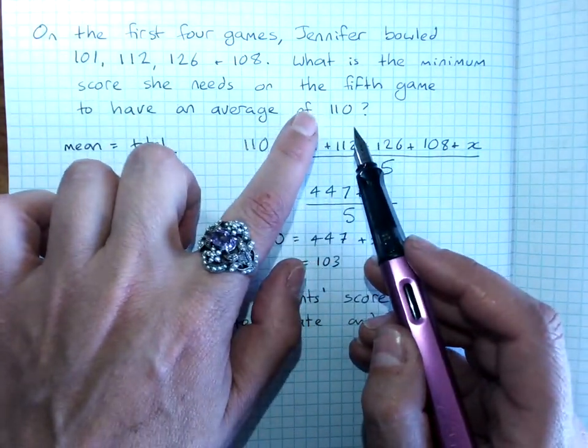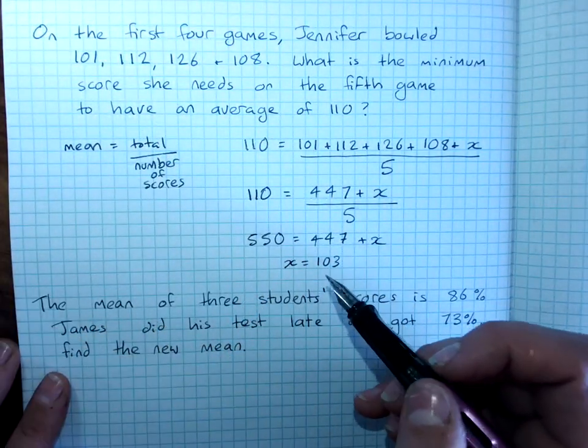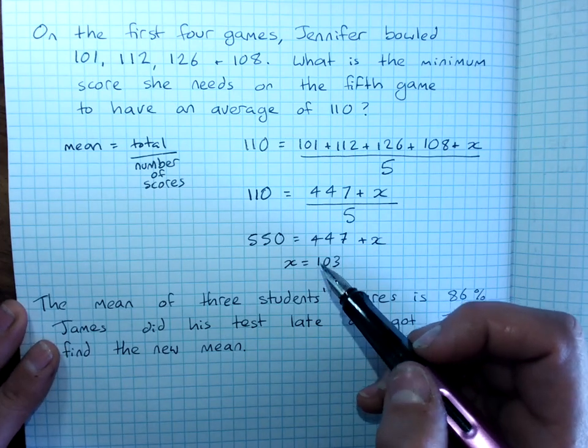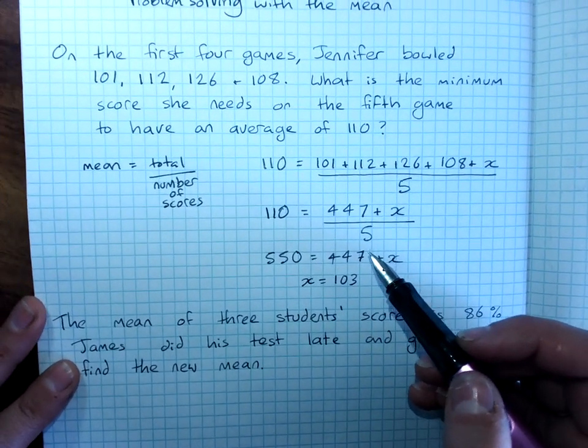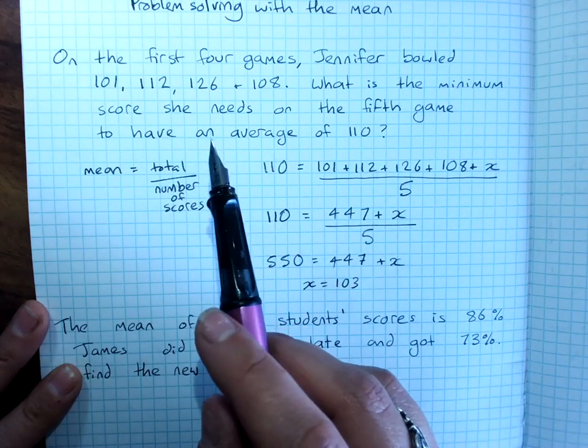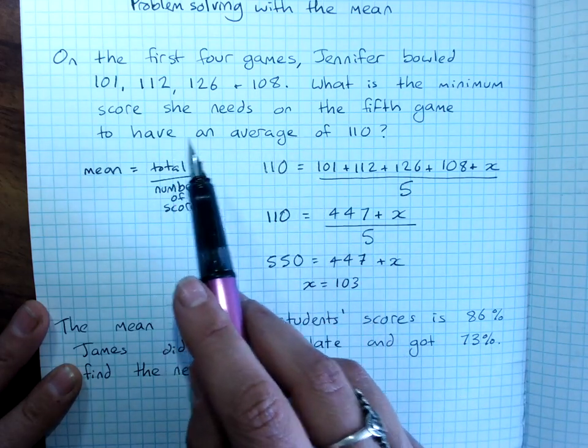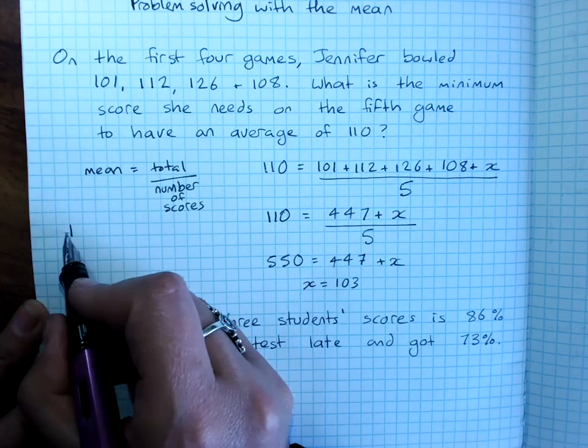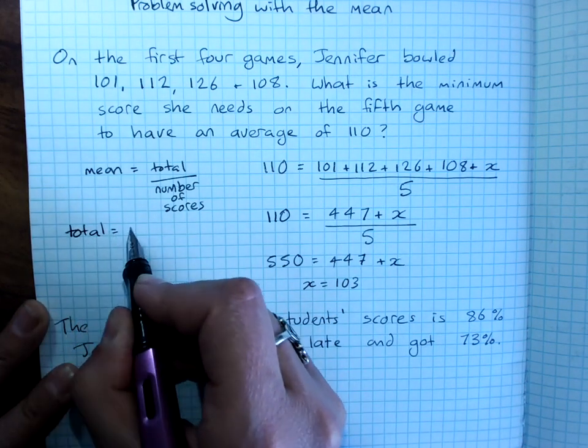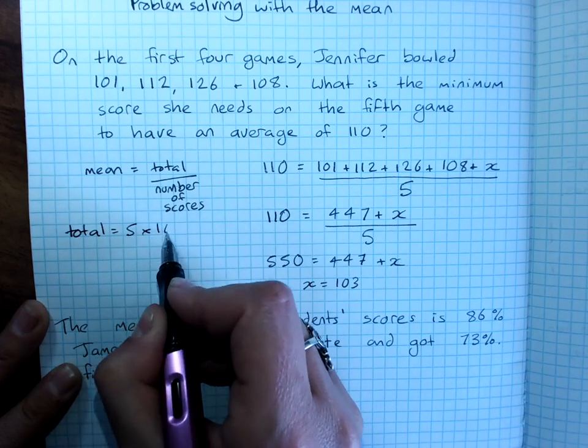So, to get an average of 110, she's got to get at least 103 on the last one. Now, if you're not as great at solving equations, then remember that to get an average of 110 over 5 games means that the total will be 5 lots of 110.